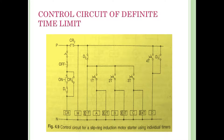When timer 1 times out, it triggers the next stage. The time during resistance shows approximately 3 seconds per stage — for example, take 10 seconds total for the full sequence, with each resistance stage timed at around 3 seconds.